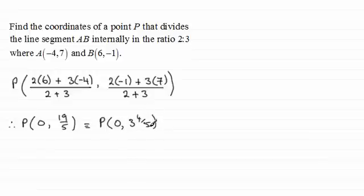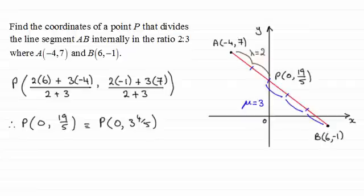Now if you had drawn a sketch of this, then it should have looked something like this. And you can see that the answer that we've got for P looks sensible. We've got our points A and B, and we've divided the line segment AB internally in the ratio 2 to 3. And you can see those equal parts there. And the point P then has coordinates 0 and 19 fifths.